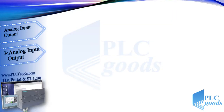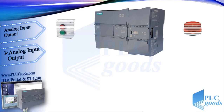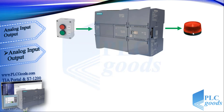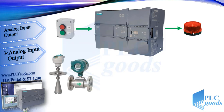Until now we have done many projects with digital inputs and outputs. In the beginning of this tutorial we explained PLC hardware and its wiring. We know digital sensors or push buttons have two states — on or off, or open and closed. These instruments use 0 and 24 volt DC to send their states to the PLC, and we can use 0 or 24V DC to turn on or off a digital output such as a signal lamp.